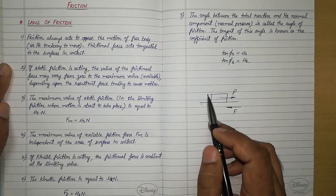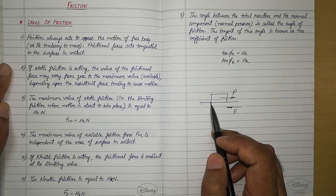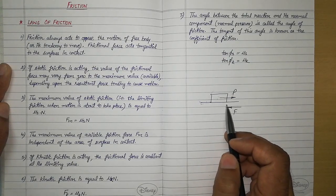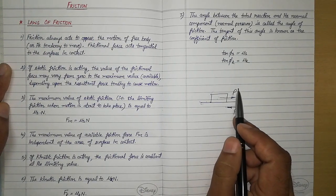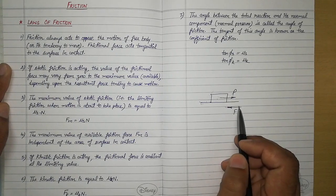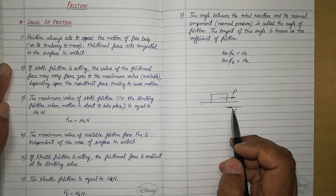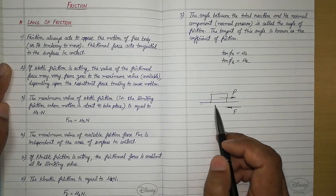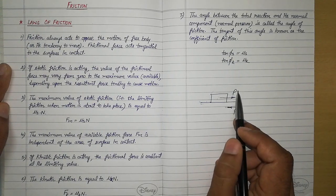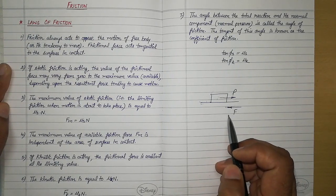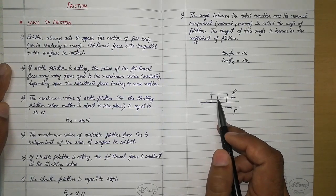The body is not moving because frictional force develops between the contacting surfaces. This frictional force will have some value that varies from 0 to the maximum value. If we increase the applied force further, the friction force also increases up to a certain value, which we call limiting friction or the maximum friction available between the contacting surfaces. If the force is increased beyond that, the maximum frictional force will be overcome and the body will start to move.